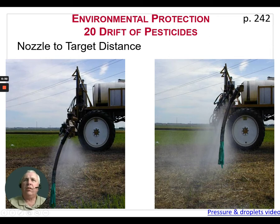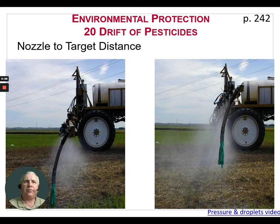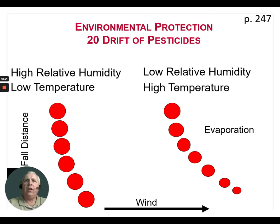Nozzle-to-target distance is another factor. The closer we can run our nozzles to the ground or target while still achieving proper coverage and overlap, the better — and the less drift there will be. In this series of photos, you can see that with the boom lower, there's only a little drift, but it greatly increases when the boom is higher. These pictures were taken just moments apart.